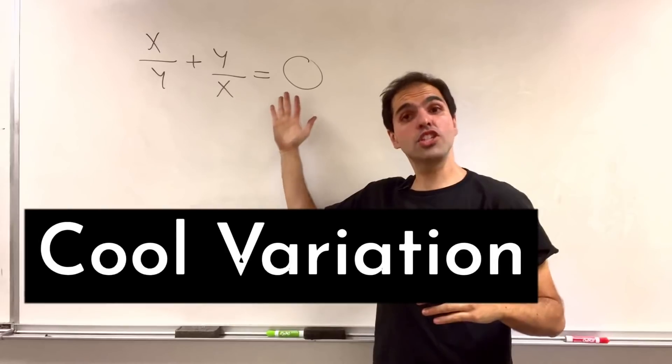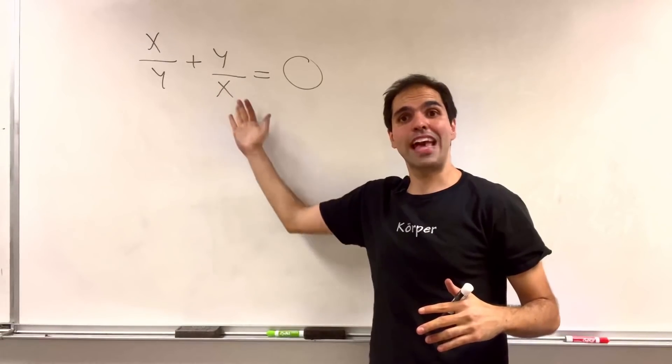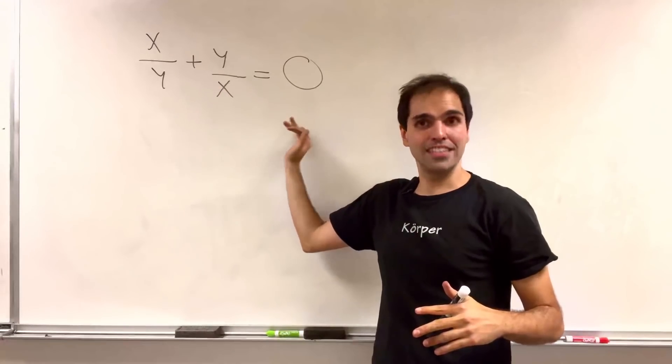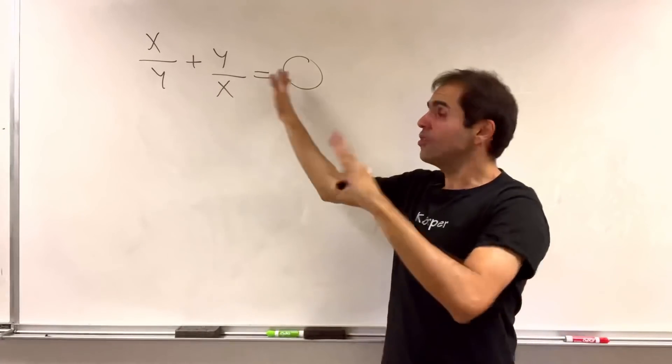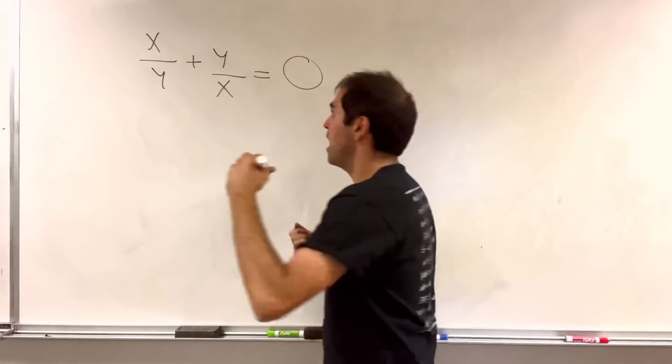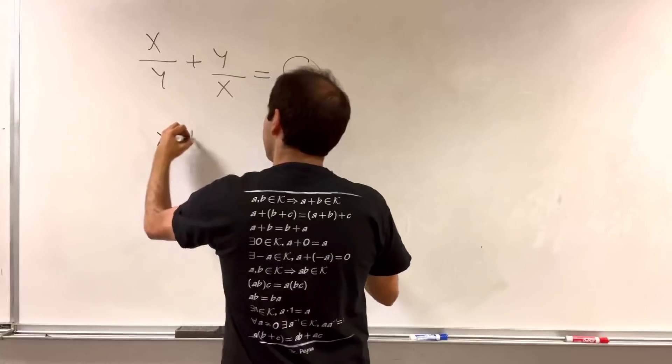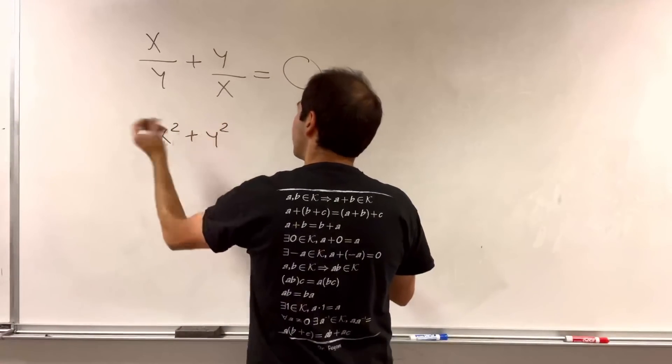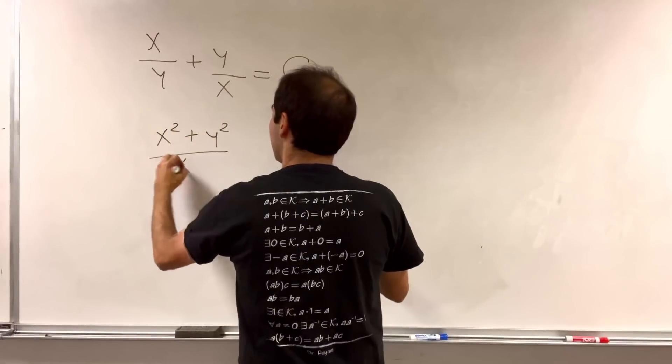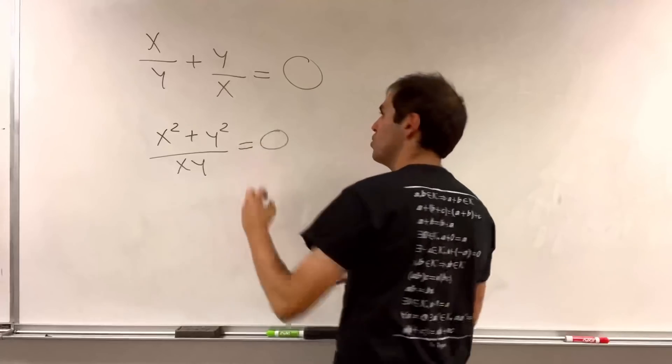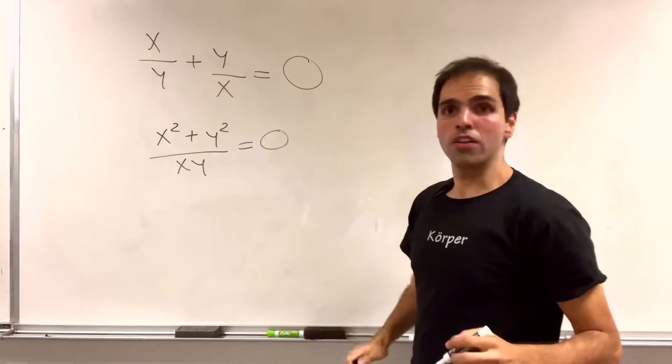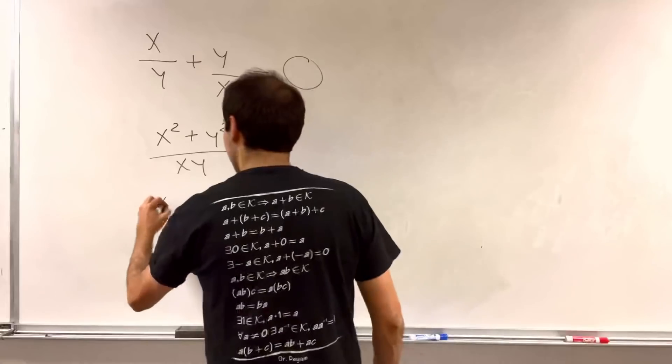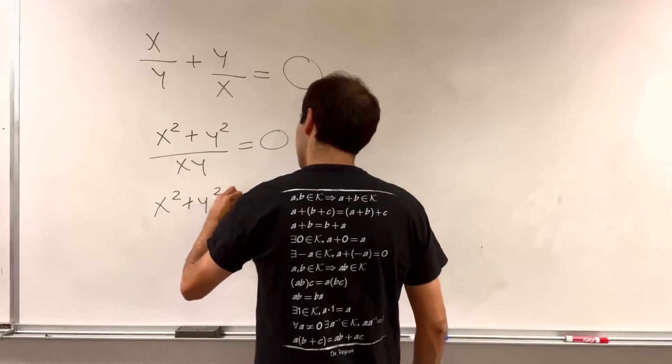And this is in sharp contrast with the equation x over y plus y over x equals 0, which looks very different. We can put it on a common denominator: x squared plus y squared over xy equals 0. So cross-multiplying, you get x squared plus y squared equals 0.